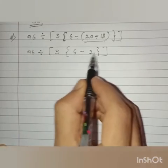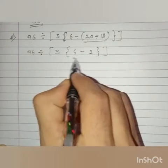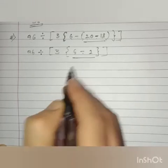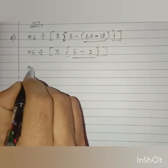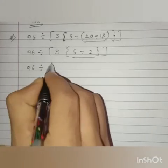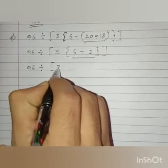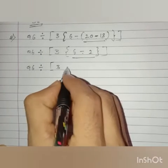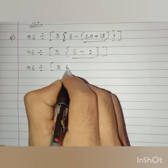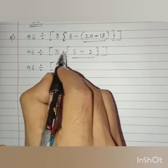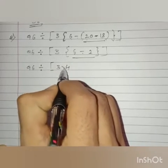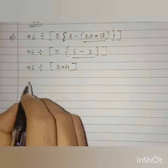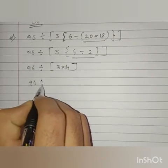After removing the common bracket, we have to remove the curly bracket. The operation in the curly bracket is subtraction. Remaining as it is: 96 divided by big bracket, 3 — so 6 minus 2 is 4. We do not have any bracket between 3 and 4, so it means multiplication. Big bracket close.